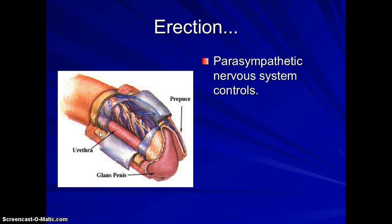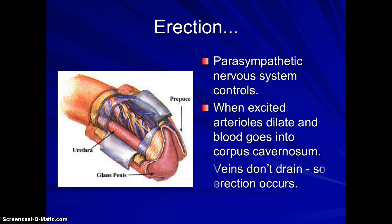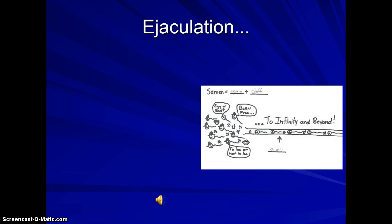An erection is controlled by the parasympathetic nervous system and is about blood flow — there are no bones and no muscles in the penis. Blood flow increases into the penis while the amount leaving decreases, causing the erection. The veins from the penis are compressed by the spongy tissue, which is what causes and sustains an erection.